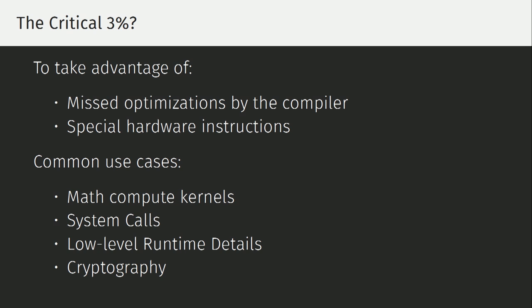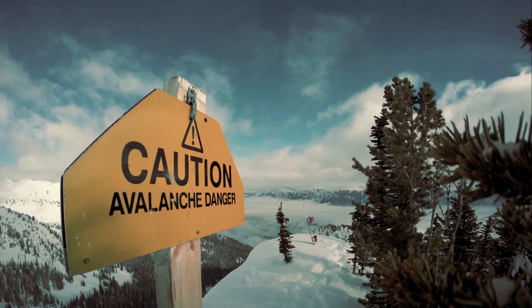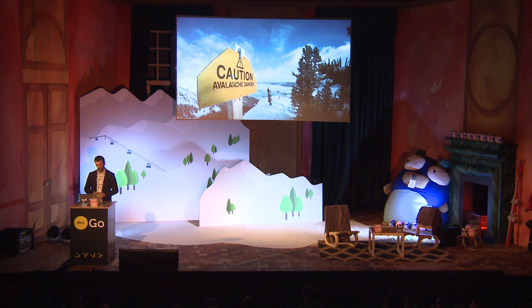Often it's because of special hardware instructions that you can only get by writing the assembly directly yourself. Common use cases are math compute kernels, low-level OS interaction through system calls. The runtime uses assembly extensively. And cryptography is an example we're going to focus a lot on in the rest of this talk. I'm not here to say don't write assembly. I'm here to say if you're going to, do it safely.